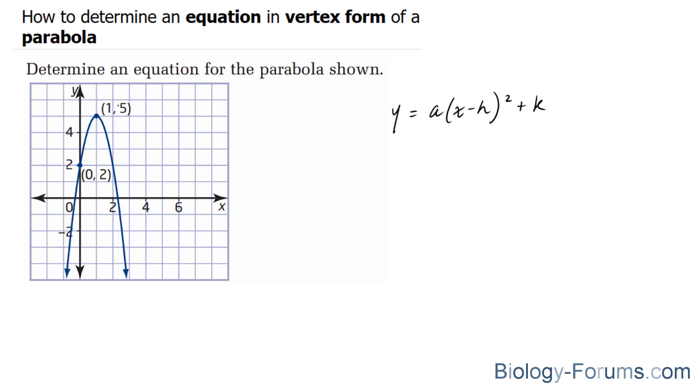That being said, the vertex is at (1, 5). So therefore, this will be our h, and this will be our k. So let's replace those values here: y is equal to a(x - 1)² + 5.